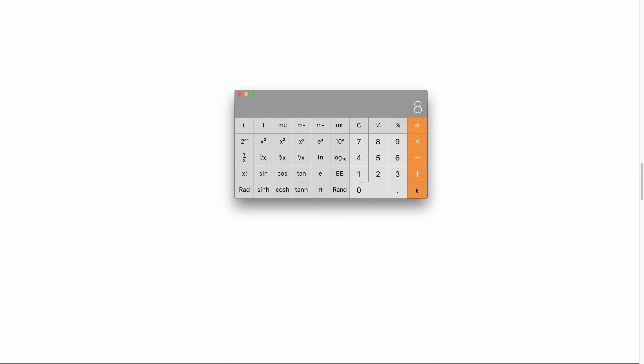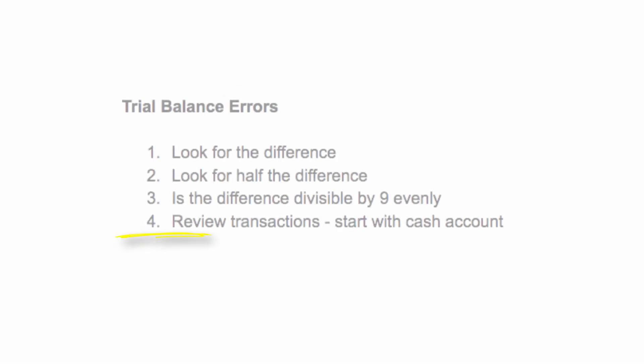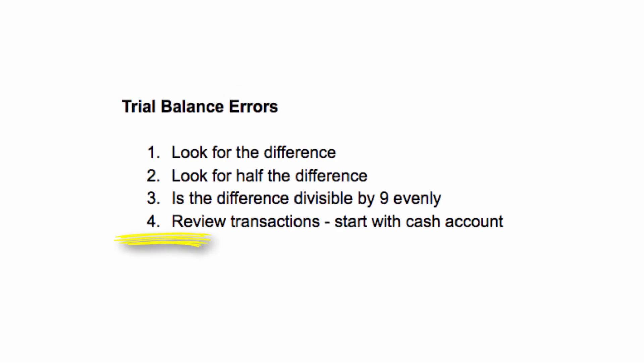Your last trick, unfortunately, is not a trick at all. You're done with shortcuts and have to start going through your transactions to find mistakes. Because most transactions involve payment or the obligation to pay, start with your cash account, accounts receivable, and accounts payable — they hold the most entries and are likely to hold the most errors.